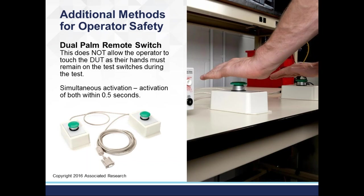More details on the dual remote palm switch: it does not allow the operator to touch the DUT, as both hands must remain on the test switch during the test. Both must be pressed within half a second or the test won't start. For those using our dual palm remote switch, your PLC remote must be on, and on Hypot Ultra instruments, you need to activate the dual test parameter under the user interface to have these work properly.